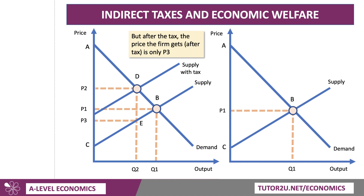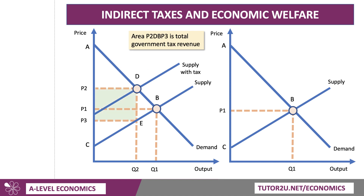Producer surplus drops to the new area P3, E, C. So consumer surplus is down and producer surplus is down — there must have been a transfer involved. The key is that there is an area of tax revenue equal to the area P2, D, E, P3, which is the government's tax revenue. Some of it is paid by the consumer — the top portion from P1 to P2 — and some is paid by the producer, from P1 down to P3.